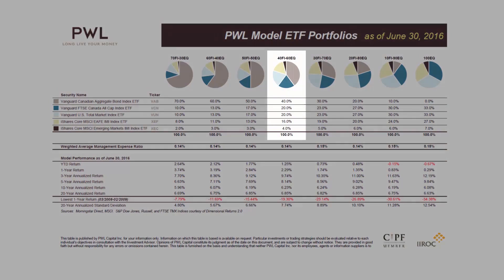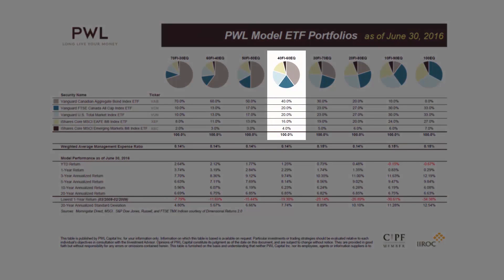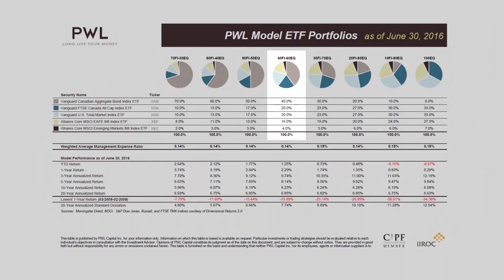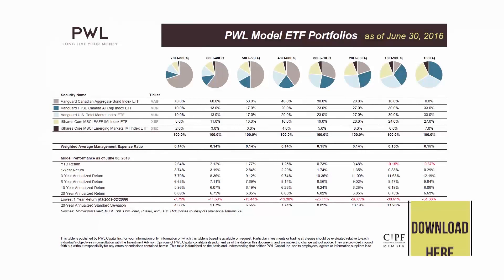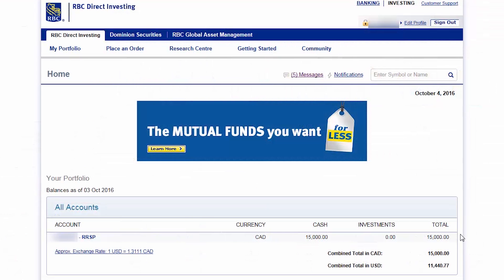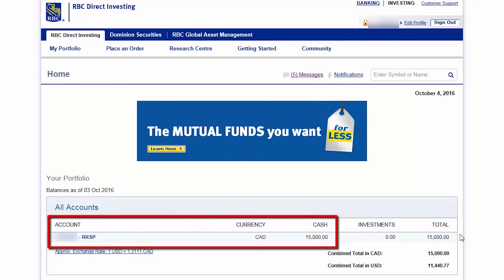For example, we'll be purchasing the five ETFs from my 40% fixed income, 60% equity model portfolio. Please feel free to download the model portfolios from my blog before getting started. After reviewing our account information, we find that there's $15,000 of cash available for investment within the RRSP account.